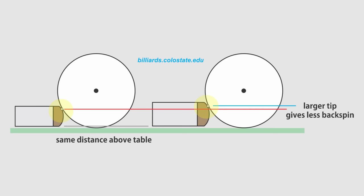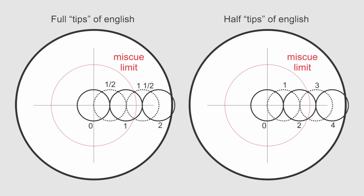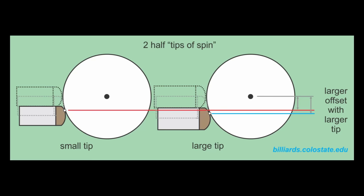Some people judge the amount of spin applied by visualizing tips or half tips of cue displacement from center ball. Here two half tips of spin is shown for both a small shaft and a large shaft with the same tip roundness. Obviously if you move a large shaft a full tip width down, the resulting tip contact point will be lower. So does a larger shaft allow you to put more spin in the ball? No, unless you blindly use tips of spin and fail to judge the desired tip contact point correctly.